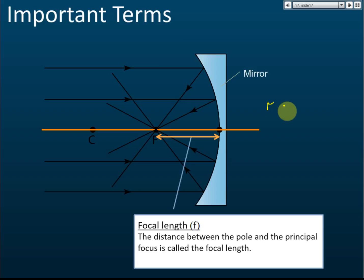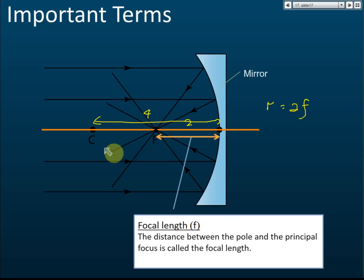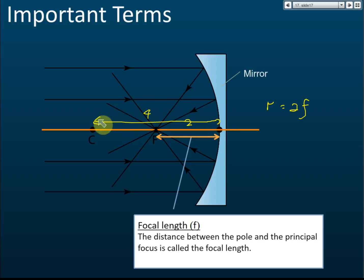The relationship between radius of curvature and focal length: the radius of curvature R is two times the focal length f. So if the focal length is 2 cm, the radius of curvature will be 4 cm. This means the principal focus F is exactly at the midpoint between the pole P and the center of curvature C.